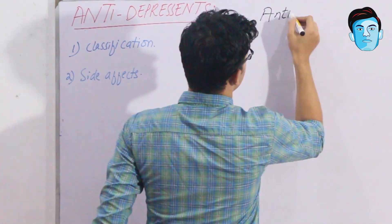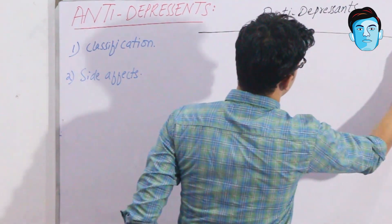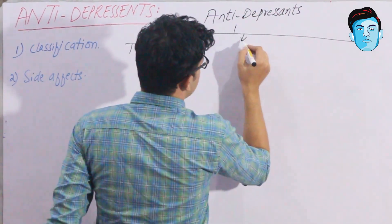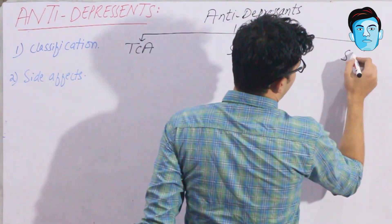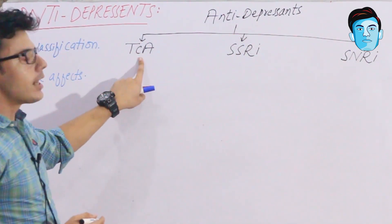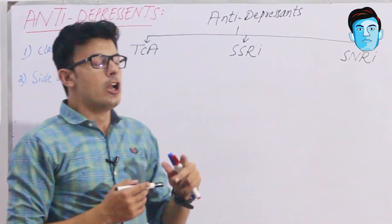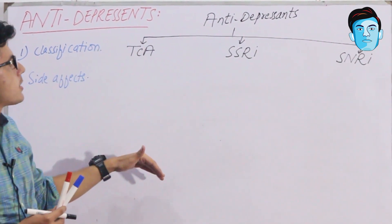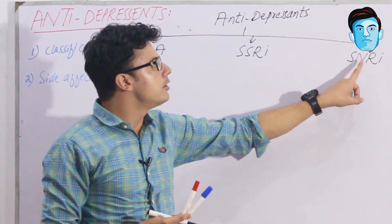Antidepressants are classified into three major groups: tricyclic antidepressants, selective serotonin reuptake inhibitors, and serotonin and noradrenaline reuptake inhibitors. Each of these groups contains a number of specific drugs.